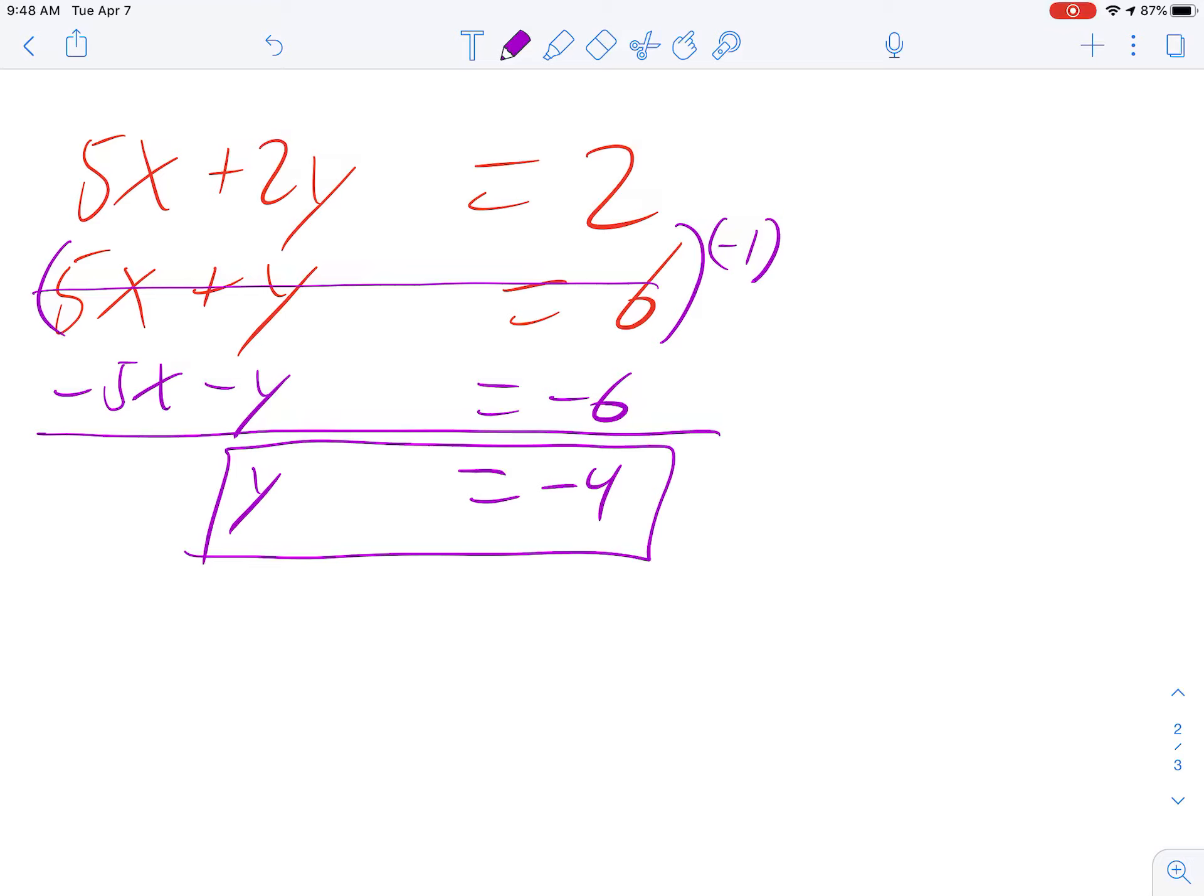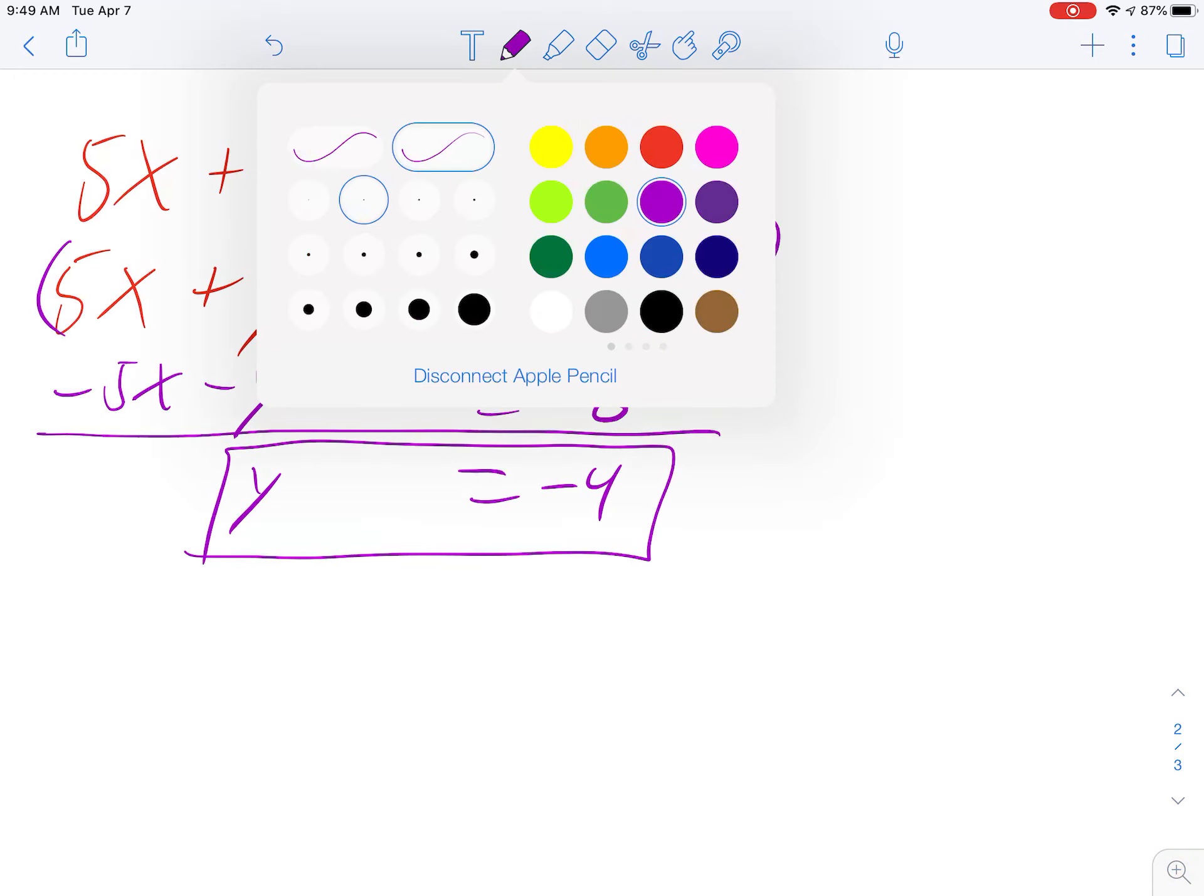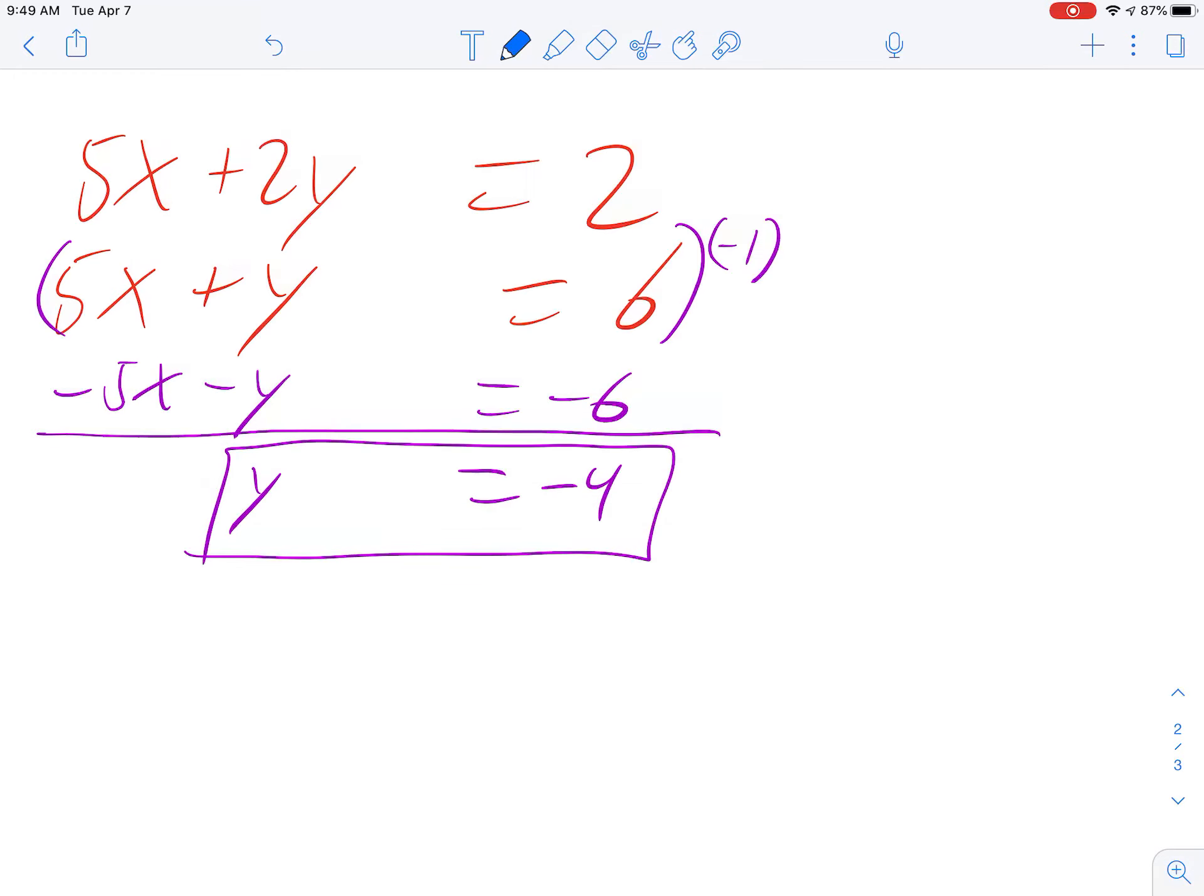Once we've got that, the rest is fairly easy. So I'm going to take that negative 4 and plug it back into one of the original equations with x and y. I'm going to pick this one just because. So that's 5x plus negative 4 equals 6. Add the 4 to both sides. And that's 5x equals 10. And so dividing by 5, x equals 2.